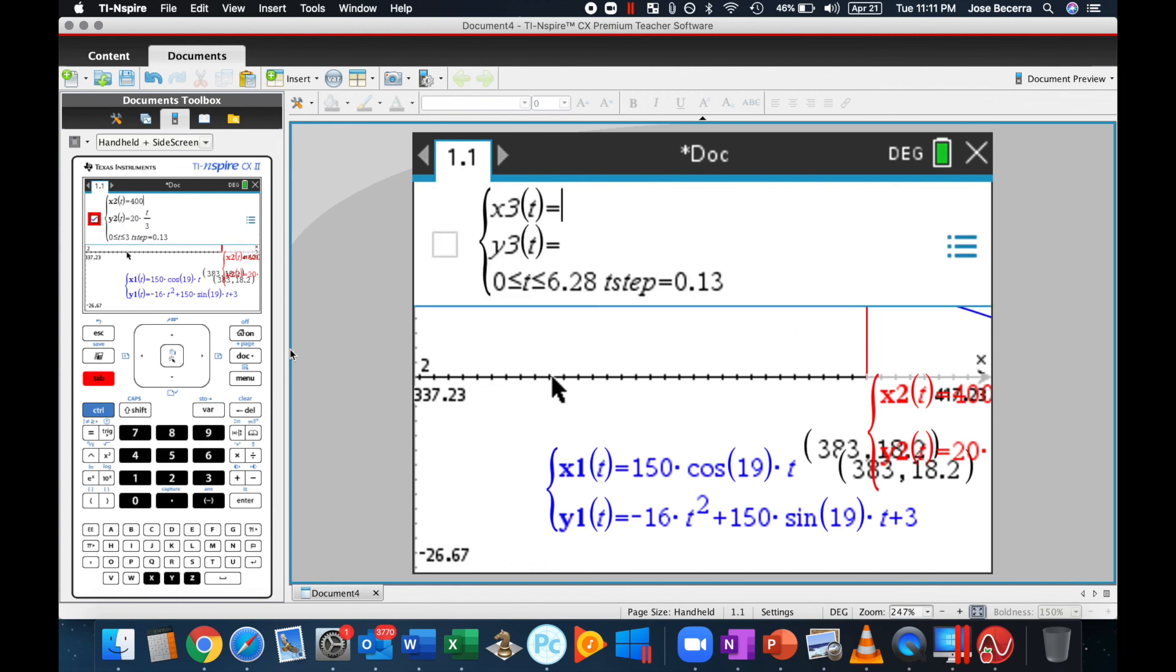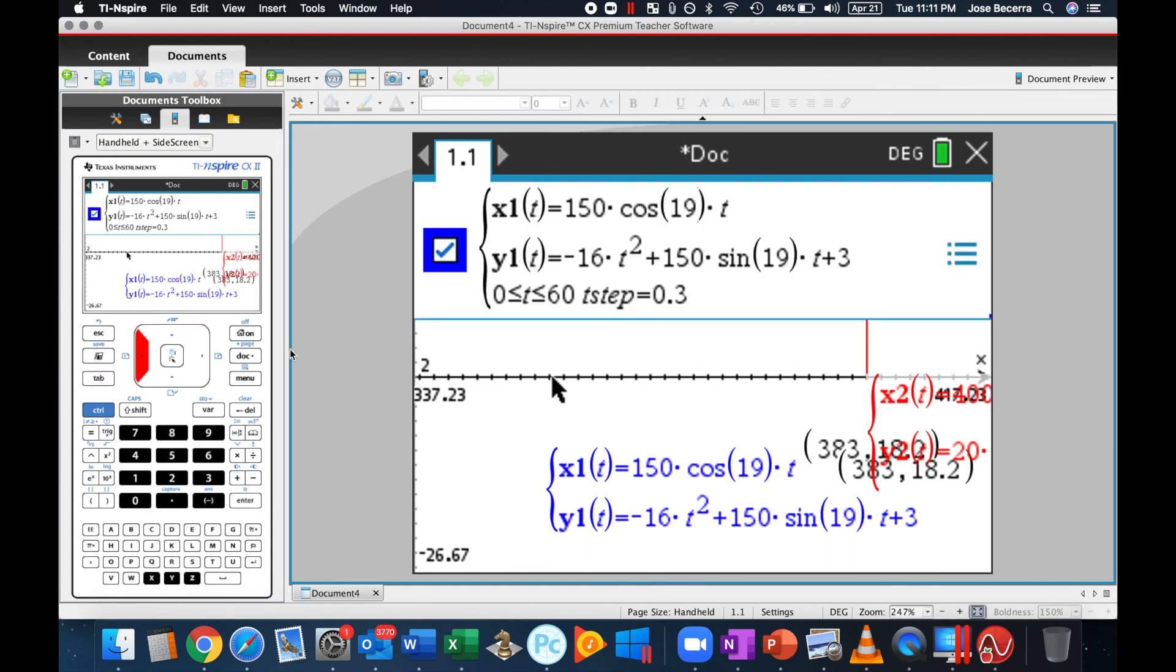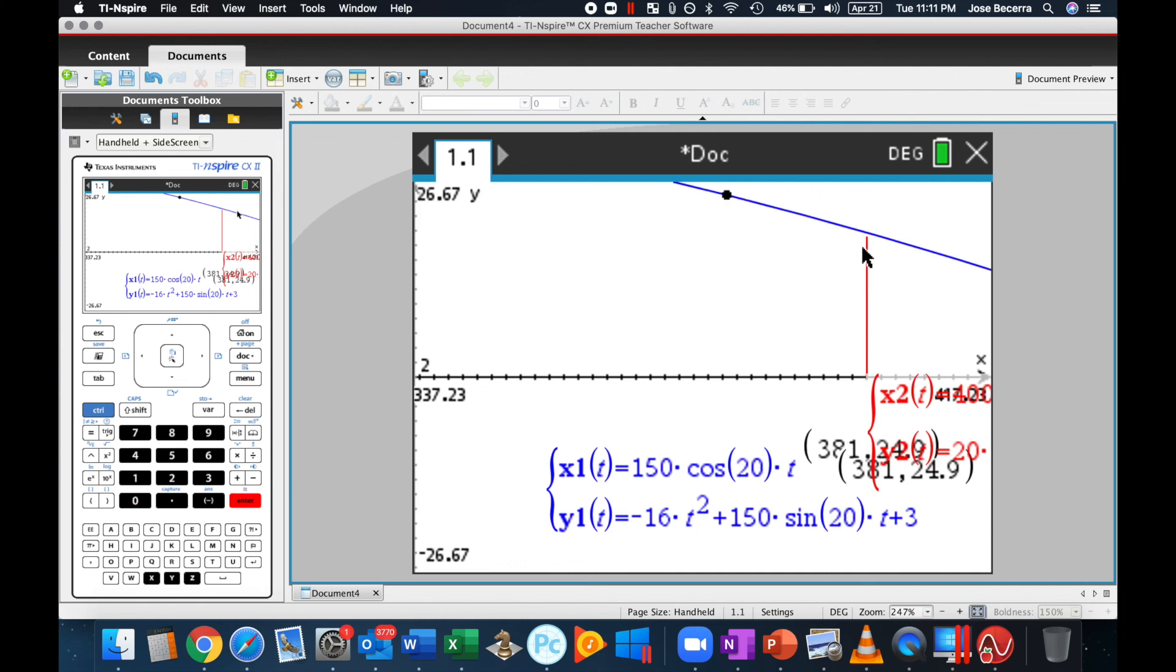But once again, we can keep trying. Let's say the ball was hit at 20 degrees, and we can sort of experiment and see if he really wanted to make a home run. It would take, at the very least, 20 degrees for them to be able to clear that wall.